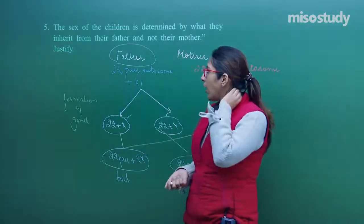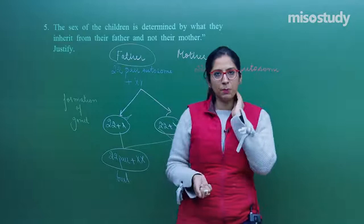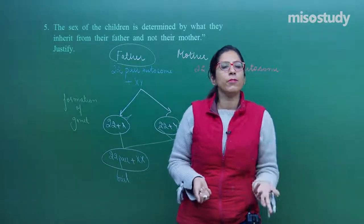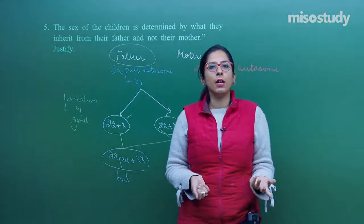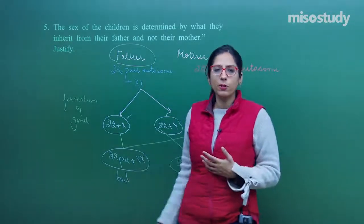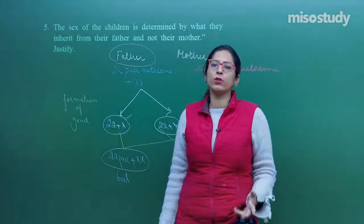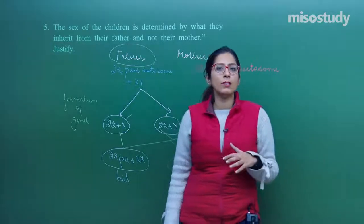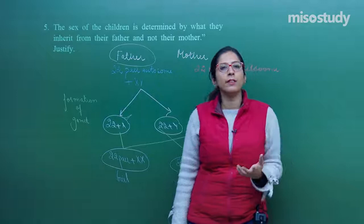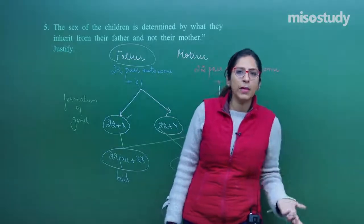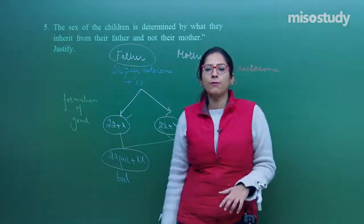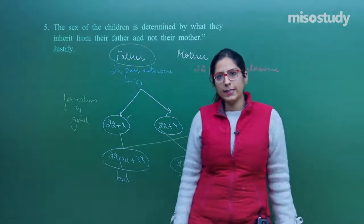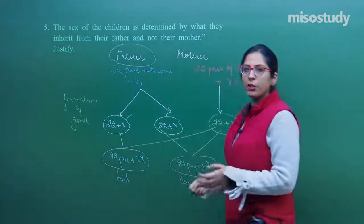So, the father determines which baby is to be produced — either a girl child or a boy child. This was question number 5. It is very important to remember that we always blame a female for giving birth to a girl child, but actually it is not the case. It is the type of gamete coming from the father that matters, though it happens randomly — so you cannot blame either the mother or the father.